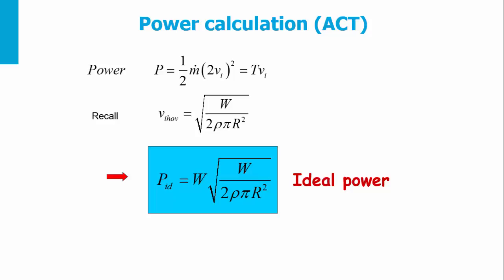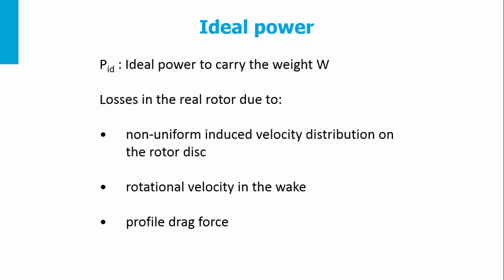The ideal power is the power needed to carry a certain weight. However, there are losses in the real rotor due to non-uniformity of the induced velocity, rotational velocity in the wake, and profile drag force. As a result, we need more power for hovering than the ideal power.